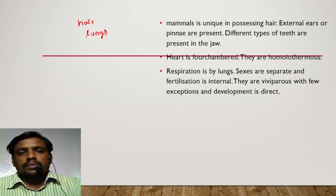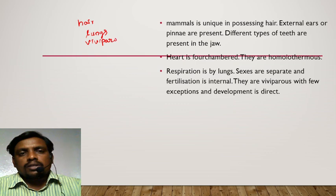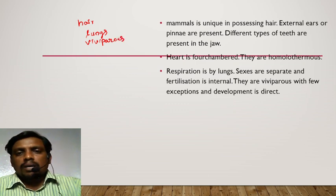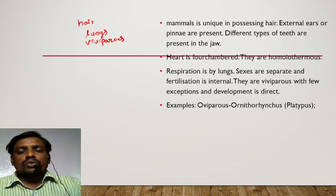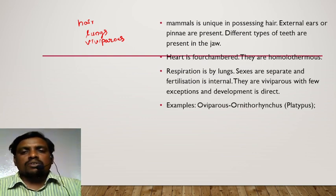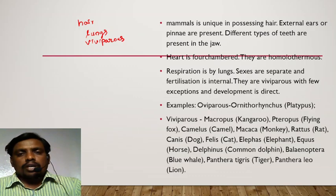Sexes are separated. Fertilization is internal. All of them are viviparous animals, except some of the mammals. Some exceptions are there. For example, Ornithorhynchus — platypus is the best example for an oviparous mammal.